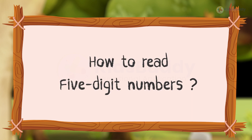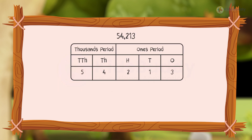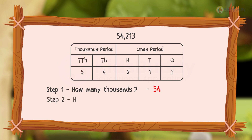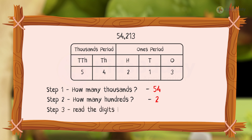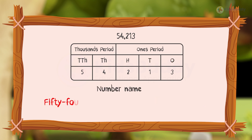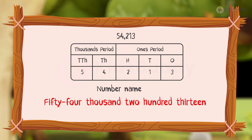Now let me teach you how to read 5-digit numbers using the place value chart. There are 3 steps in reading numbers. Step 1: How many thousands? There are 54 — we always read the digits in the thousands period together. Step 2: How many hundreds? There are 2. Step 3: Read the digits in tens and ones together — that is 13. So we read it as 54,213.